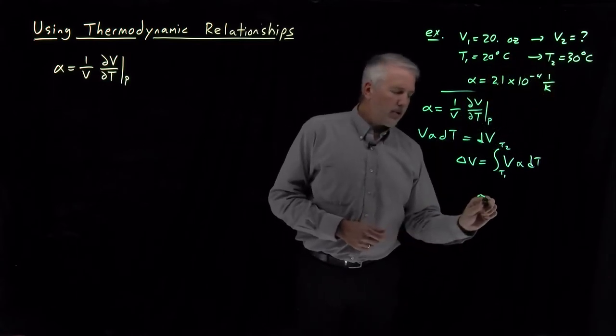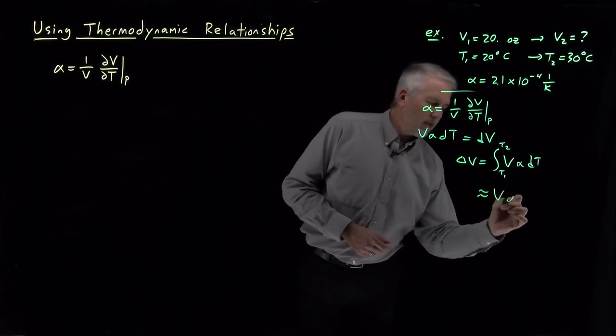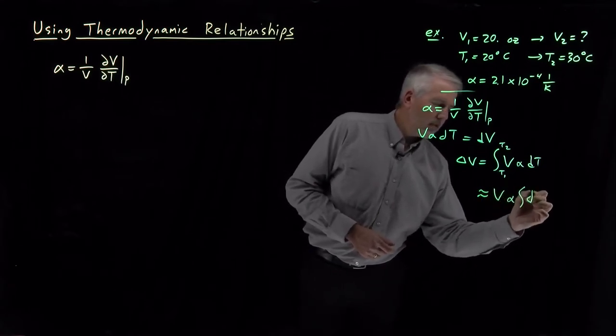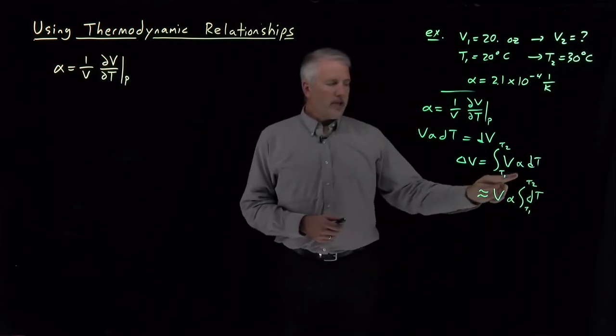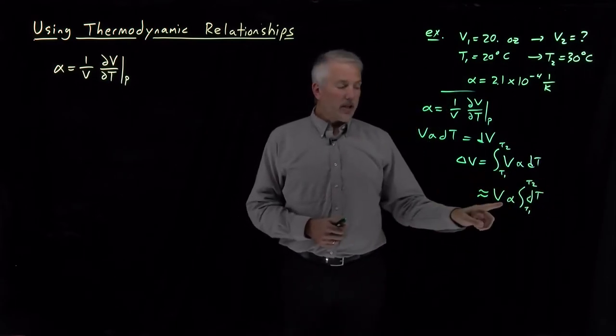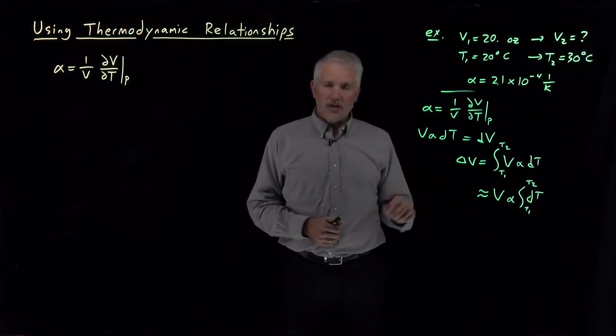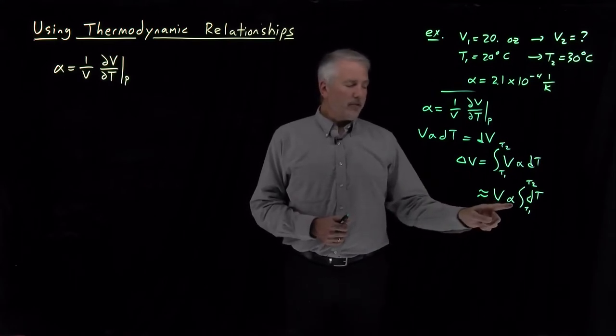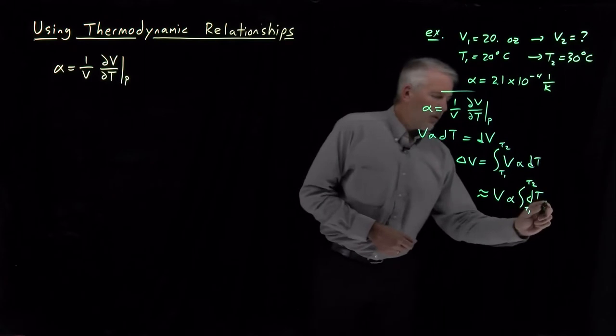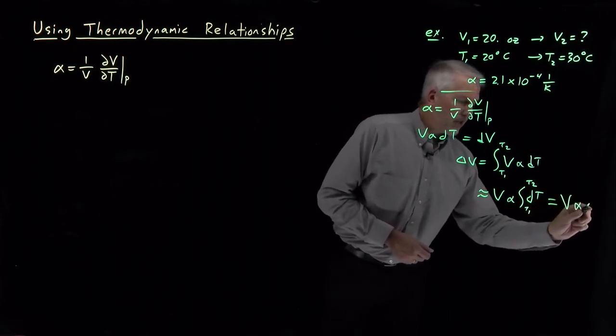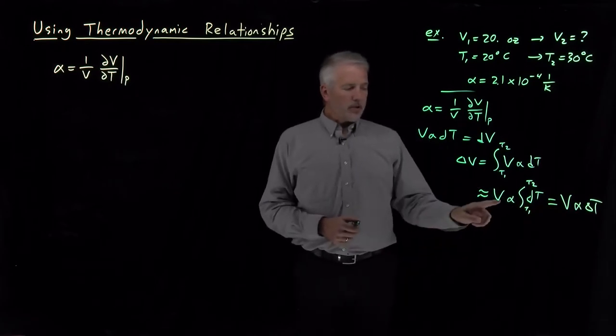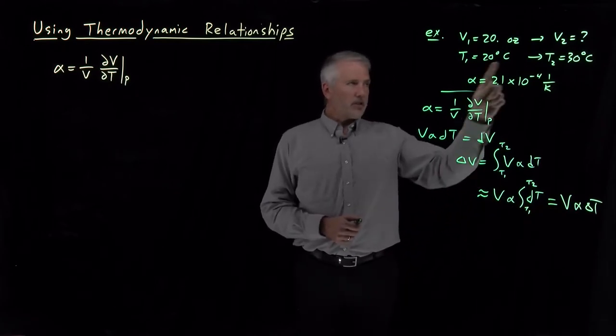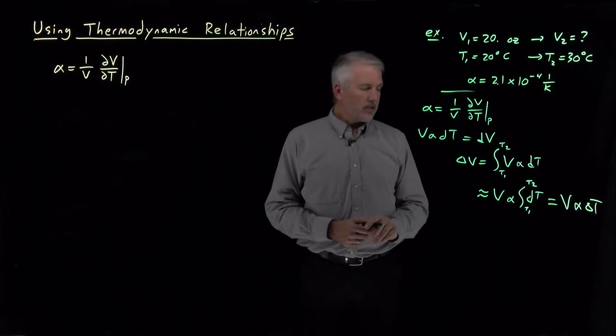That's going to be approximately equal to, if I pull the V and the alpha out of the integral, assuming that they're not going to change very much, assuming they're approximately constant, I've got V alpha times the integral of dT, or V times alpha times the change in temperature. That's the simplest way to approach this problem if we can assume the volume is not changing much, because the temperature change is relatively slight.